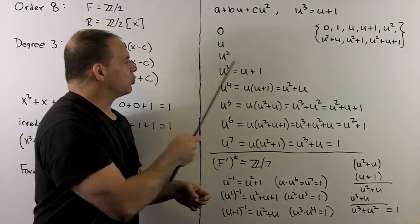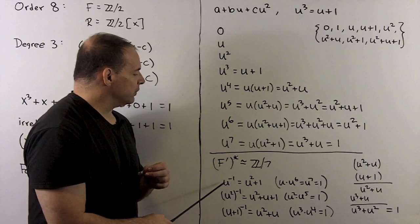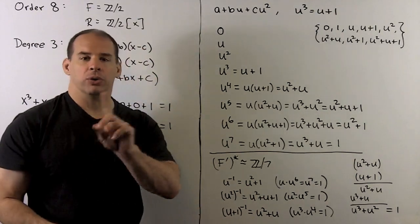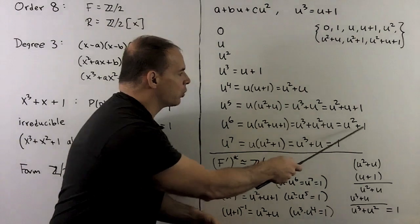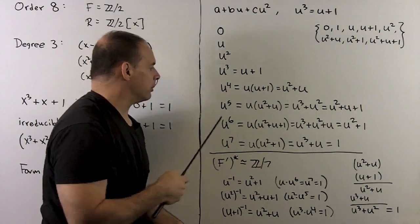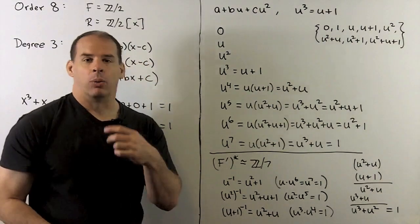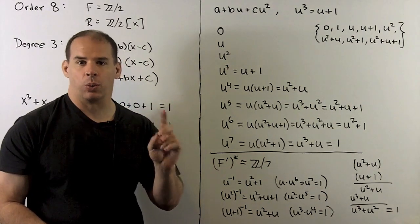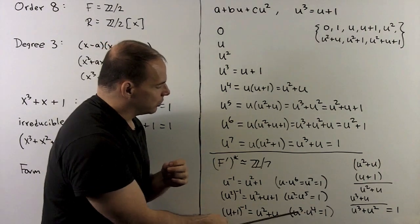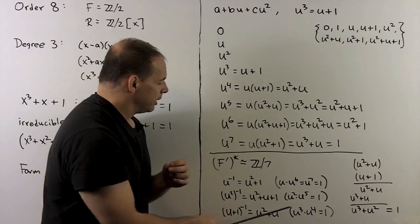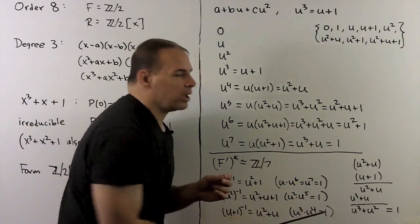Having both the power representation and the polynomial representation lets us find inverses easily. For instance, the inverse of u is u⁶ (since u · u⁶ = u⁷ = 1), and looking up u⁶ gives u² + 1. As another example, the inverse of u + 1 = u³ is u⁴ = u² + u. We can verify: (u² + u)(u + 1) = u³ + u² + u² + u = u³ + u = (u+1) + u = 1, as promised.